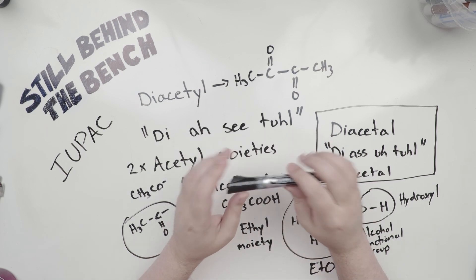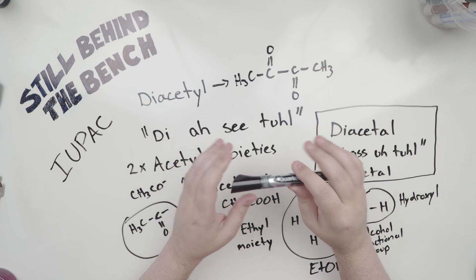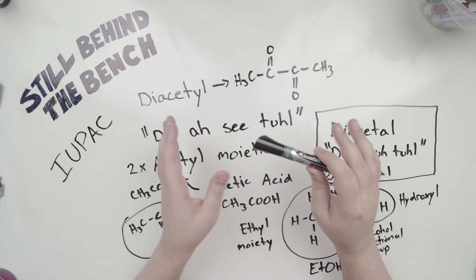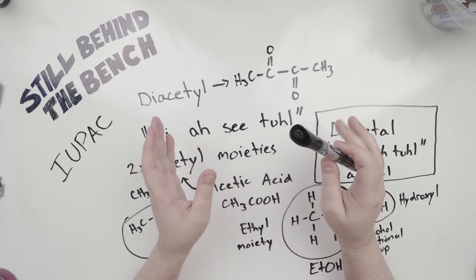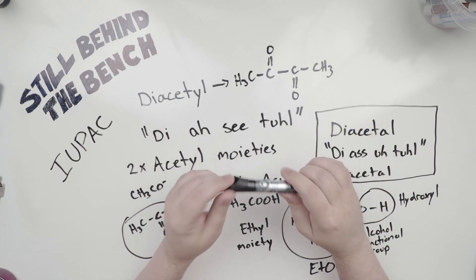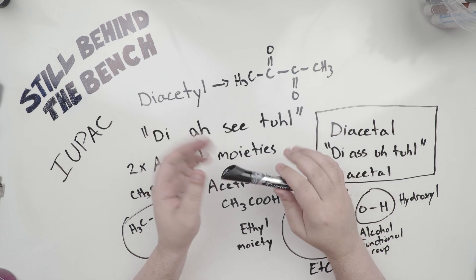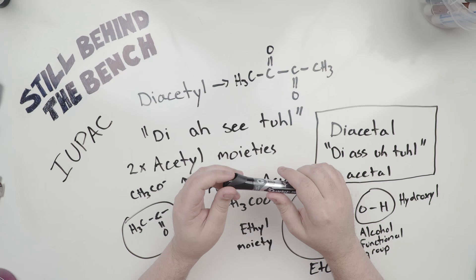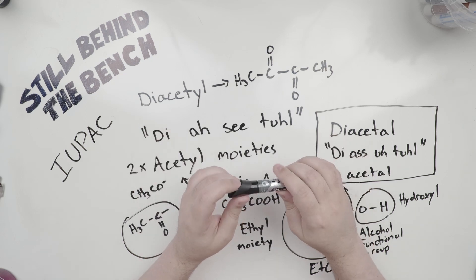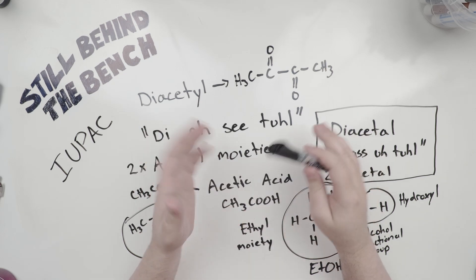Alright, so I'm going to talk briefly about the pronunciation of these compounds because I've seen them mispronounced all over the place, even by college and university professors. Then I'm going to talk about precursors and how they're created so we can understand why diacetyl is being produced in the first place. Then we'll get into the aspects of controlling its production.